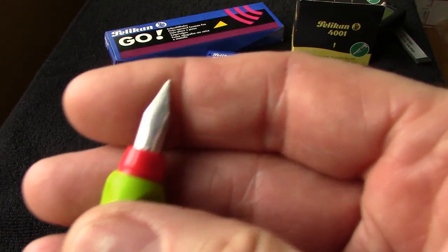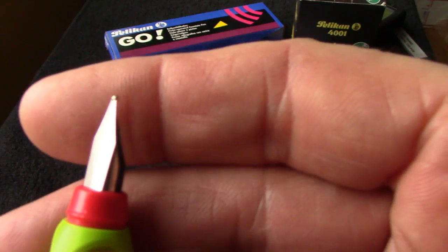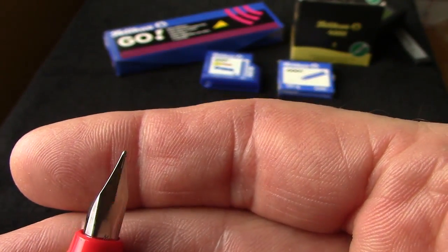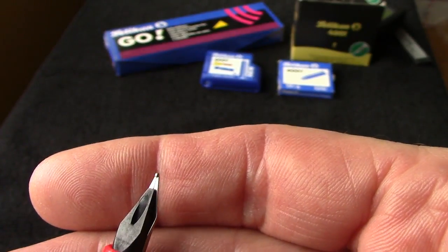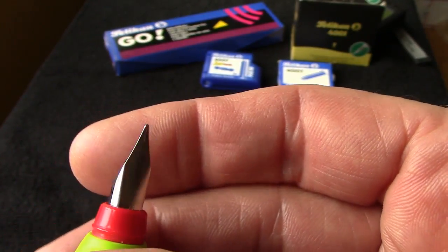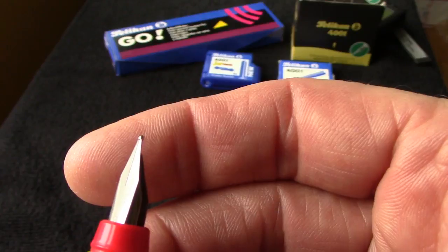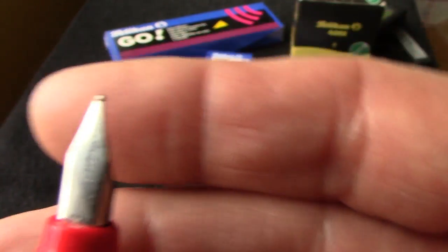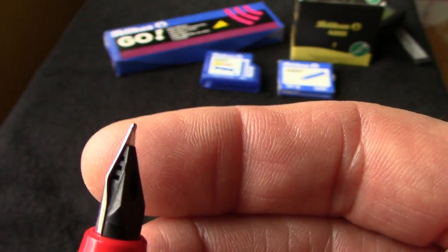It's a standard low-end Pelican point. It's very similar to nibs that you might find on other less expensive pens. This one was under $15. It's medium, as you can see by the M at the bottom. No iridium tipping. It's just made out of steel.